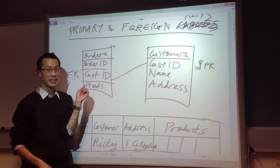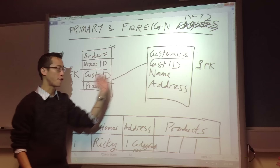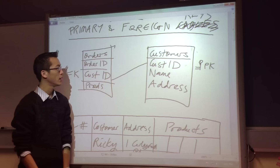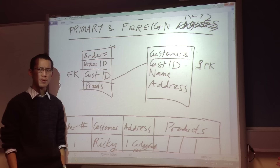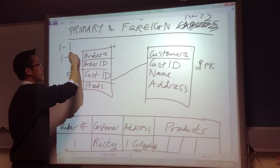So you can see — the primary key over here becomes the foreign key over there, and that's what joins these two tables and creates a relationship between them. Now, what kind of relationship is it? You've got three choices: one-to-one, one-to-many, or many-to-many.